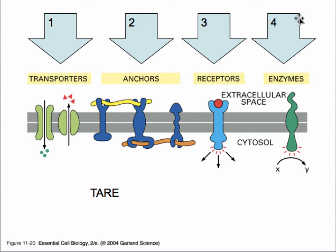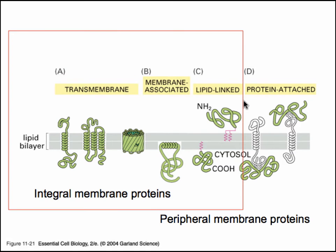The fourth class of proteins embedded in the membrane are enzymes. These enzymes can also be turned on and off, and when they are on, they convert products. The shape of proteins is also very important. In some cases, the proteins pass through the membrane from the cytoplasmic side through to the extracellular side — these are known as transmembrane proteins.